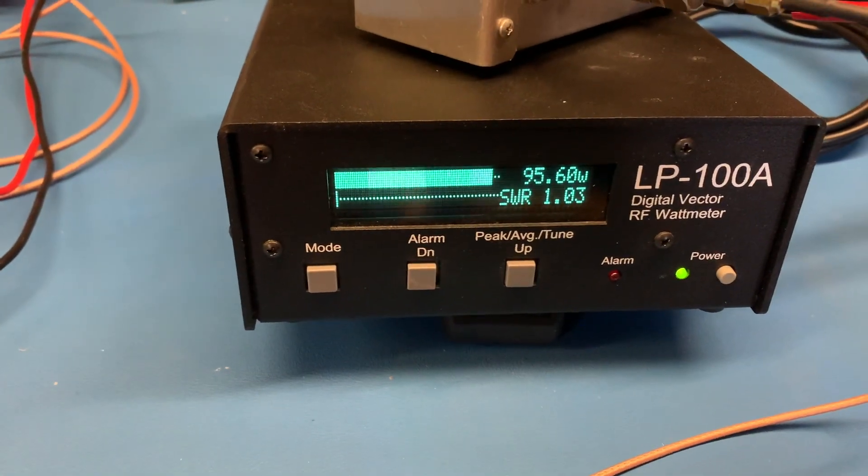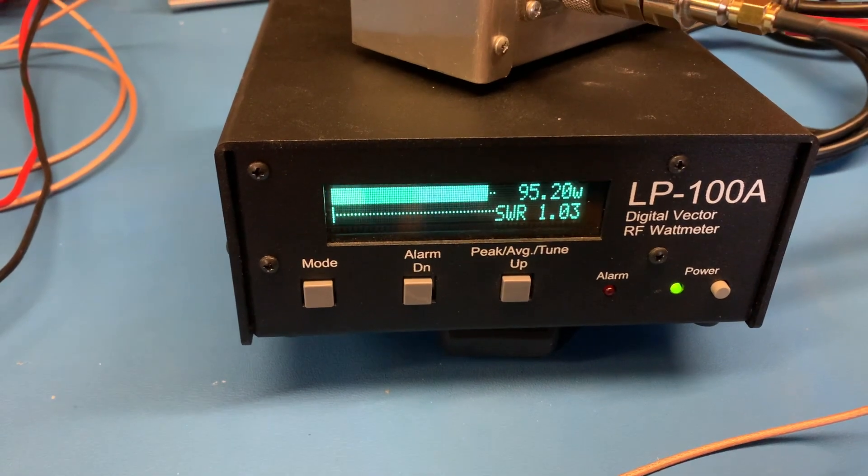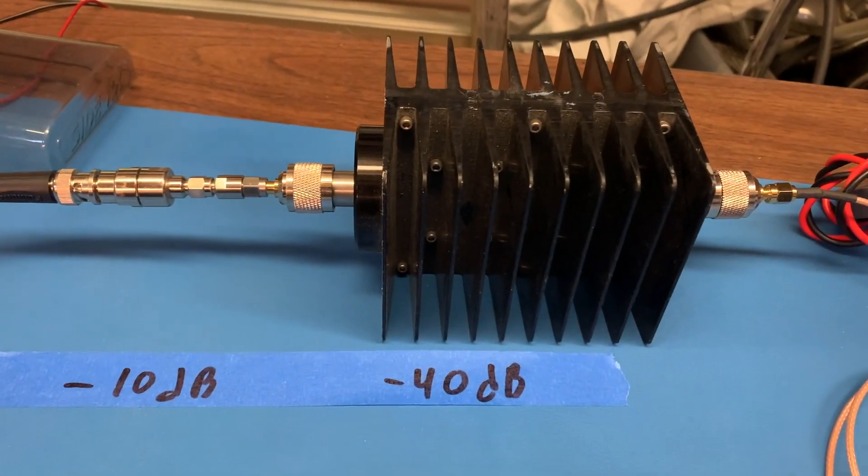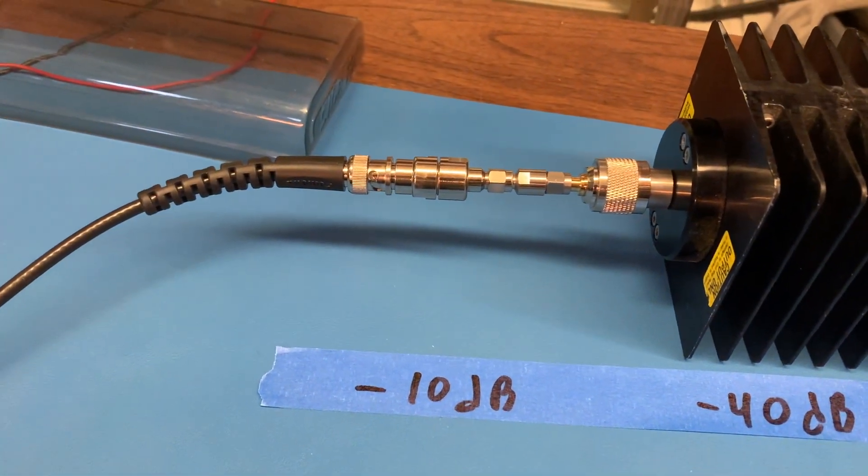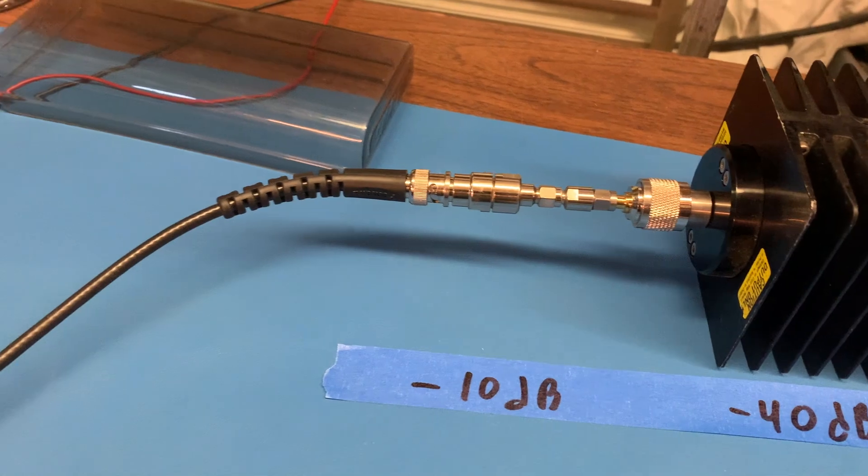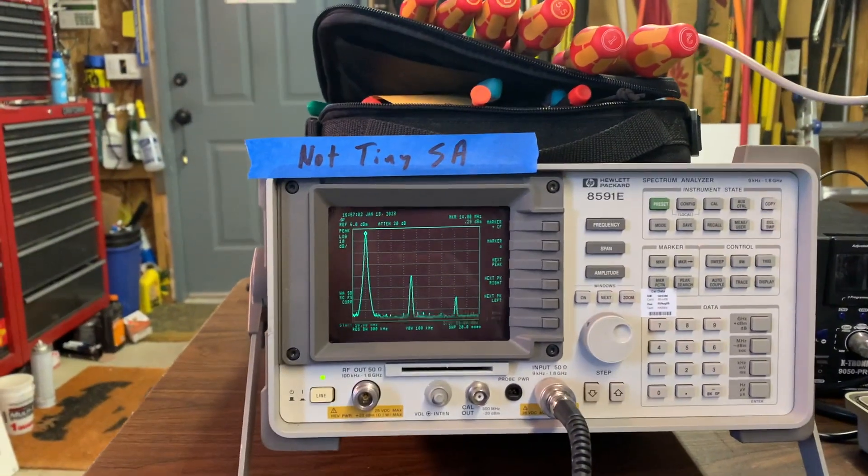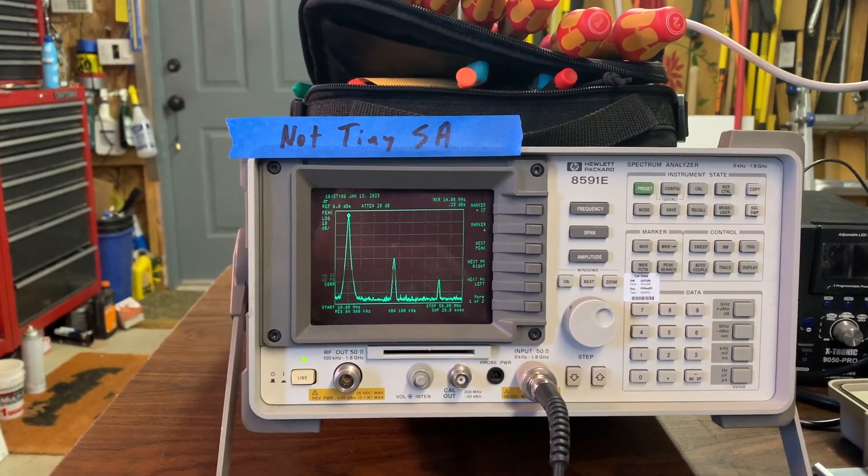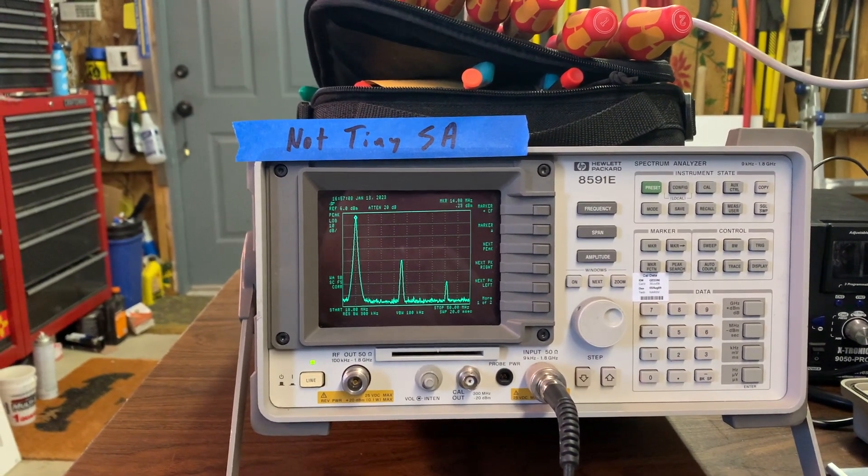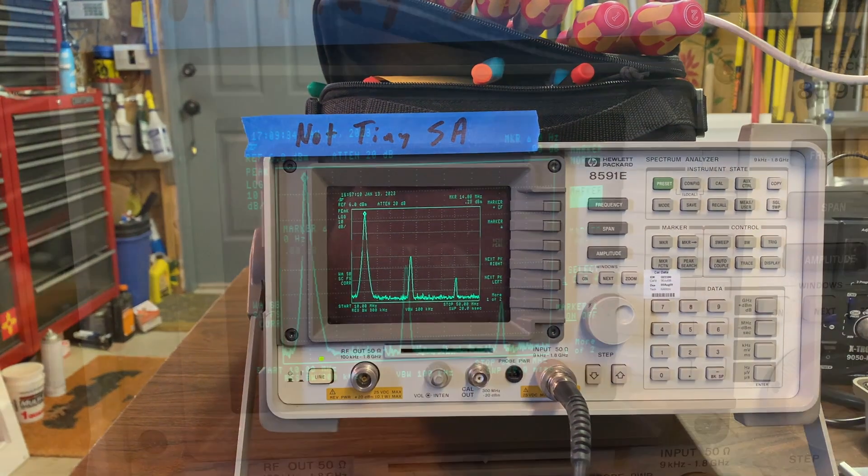And then we have the LP100A for measuring the output from the amplifier. Then it goes through a 40 dB attenuator that's in series with another 10 dB attenuation which makes the signal safe to be able to go to the spectrum analyzer. And finally we end up at the 8591E where we'll make the measurements of the harmonics that are coming out of the amplifier.